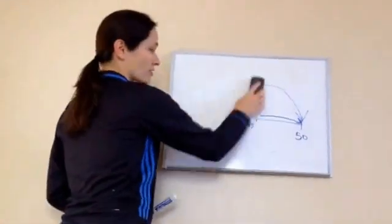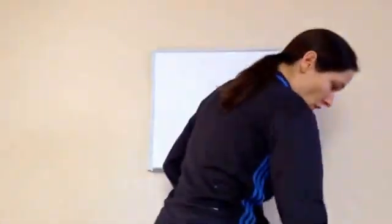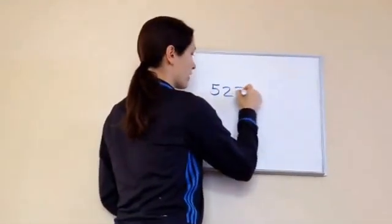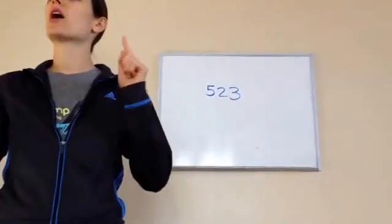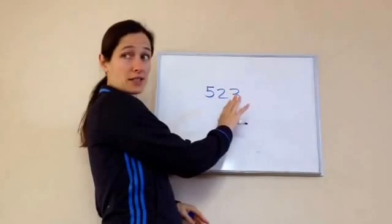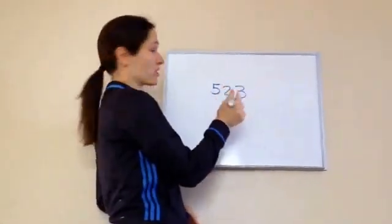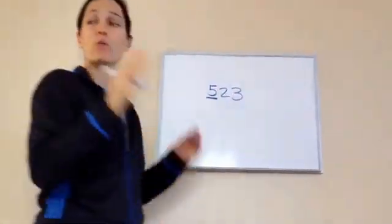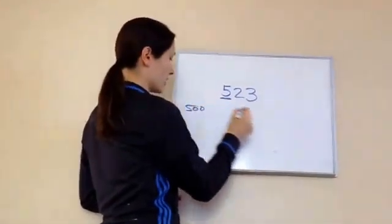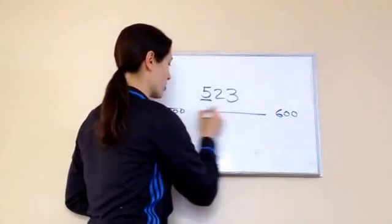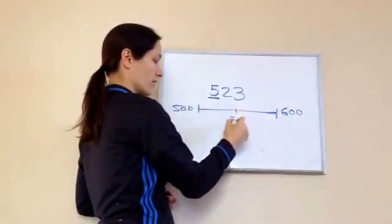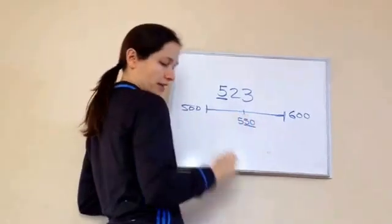All right, now, another time they may say this. Let's round the number 523 to the nearest hundred. You're no longer focusing on the tens. You're focusing on hundreds. Between which two hundreds is 523? 500 and 600. Very good. And what is our middle number? 550. Good.